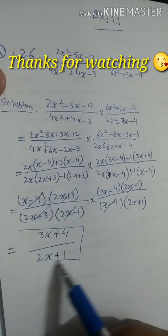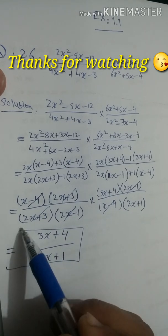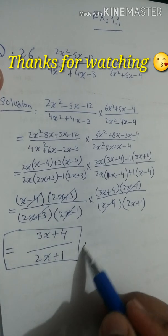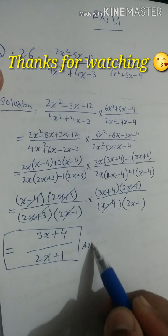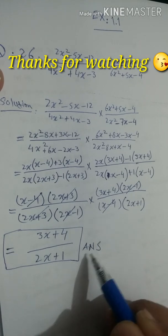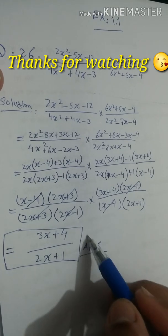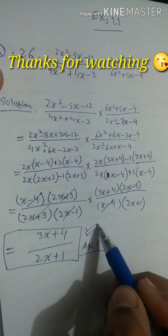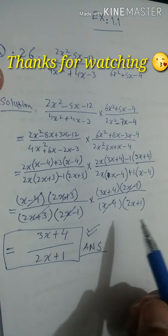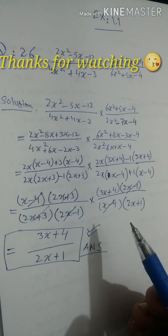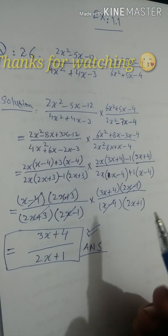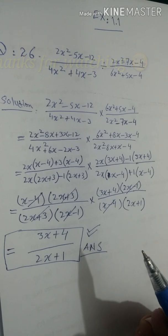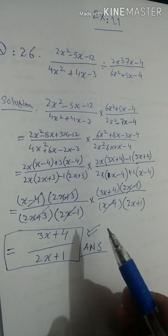Students, our final answer is (3x + 4) over (2x + 1). I hope all the steps were clear. If anything was not understood, you can ask in the comments.